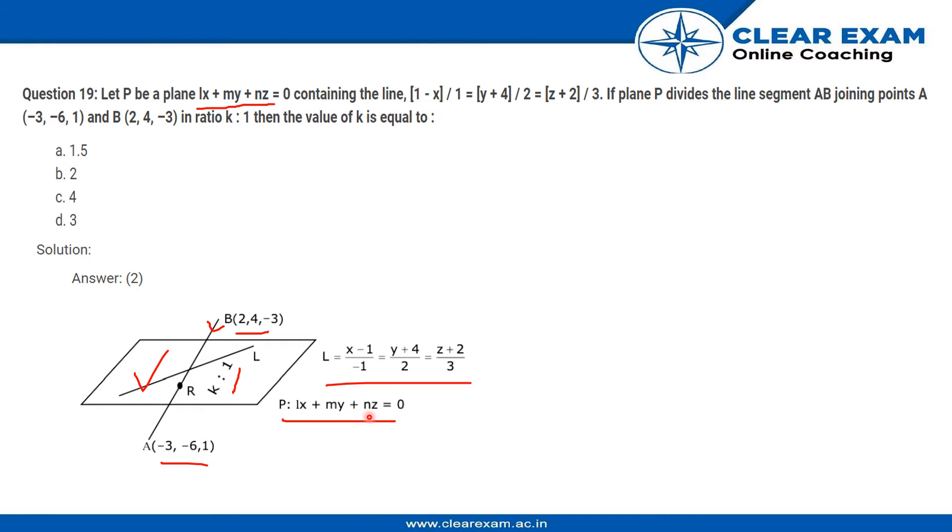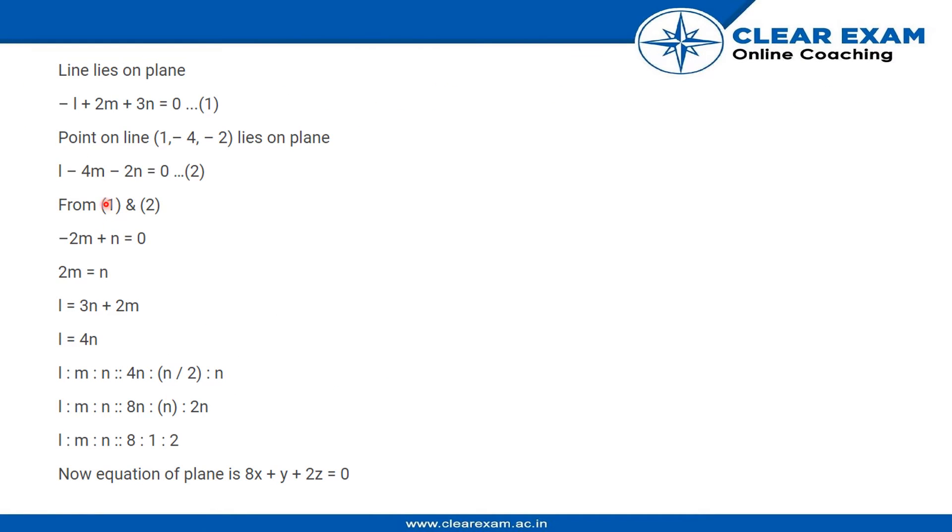2 and 3 on the plane and get the equation in terms of L, M and N. After that, we also know that the line that we have over here has the points minus 1, 1, minus 4 and minus 2. So we put these values in the equation of the plane and get another relation in terms of L,